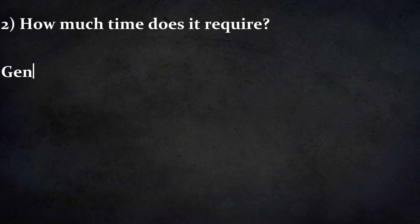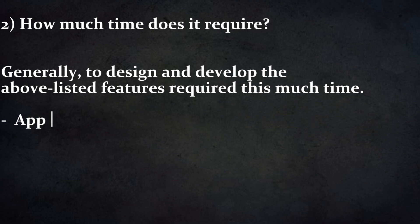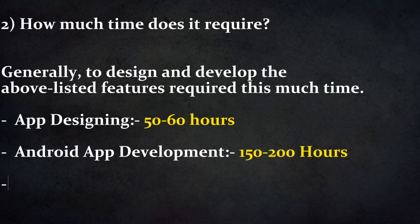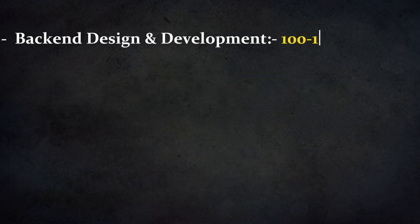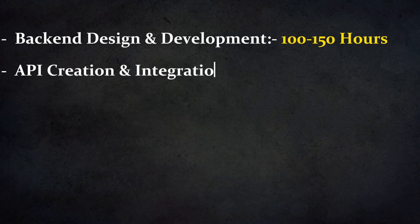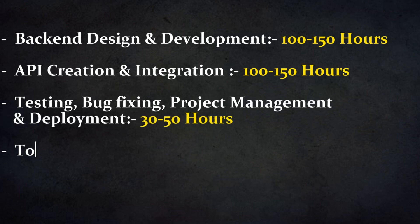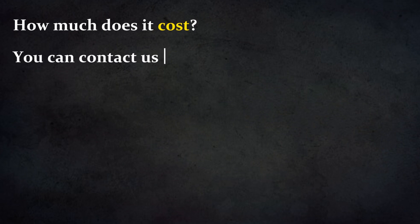How much time does it require? App designing: 50 to 60 hours. Android app development: 150 to 200 hours. iOS app development: 150 to 200 hours. Backend design and development: 100 to 150 hours. API creation and integration: 100 to 150 hours. Testing, bug fixing, project management, and deployment: 30 to 50 hours. Total: 580 to 810 hours.